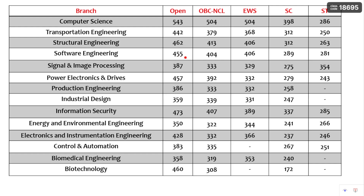Now let us get into the main content — the cutoffs for different branches at NIT Rourkela. You can see Computer Science, which is a top branch, has a cutoff of 543 in Open category, OBC Non-Creamy Layer 504, EWS 504, HC 398, HD 286. Similarly for Transportation Engineering, Structural Engineering, Software Engineering, Signal and Image Processing, Power Electronics and Drives, Production Engineering, Industrial Design, Information Security, and Energy and Environmental Engineering.